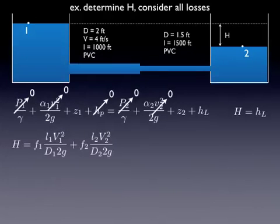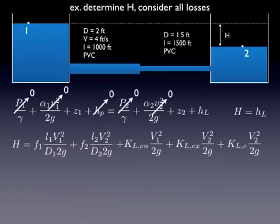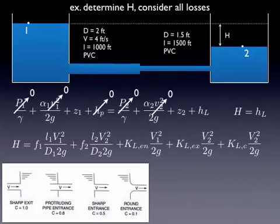For our major head losses, we're going to use the Darcy-Weisbach equation. And notice, since we have two pipes in series that are different velocities, we have to use two different major loss equations that are added together. And then we've got our minor losses, and I count three. There's an entrance as the fluid flows from the tank into the pipe. There's an exit as it goes from the pipe back into the second tank. And then there's a contraction where the pipes are joined there.